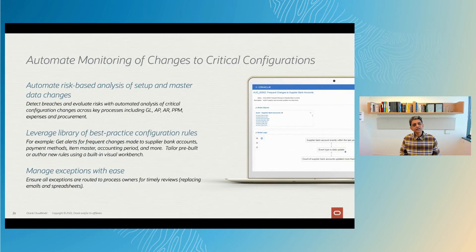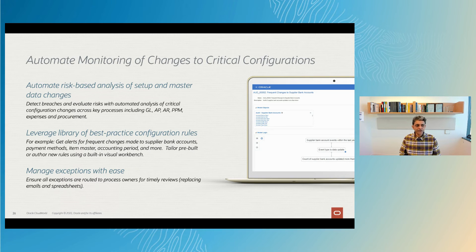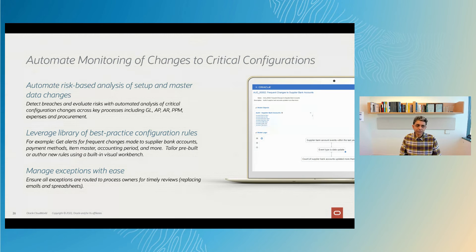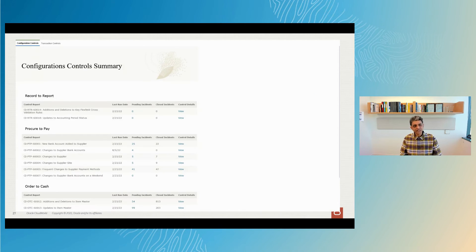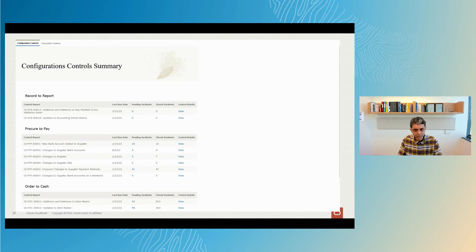Another important area for an effective internal control system is monitoring changes to configurations. You can extend the analysis to look at every change to critical setups, which have a pervasive impact on all the transactions. All the results are presented in a simple dashboard by process so that process owners can evaluate changes and make sure that nothing unexpected is happening within the application.